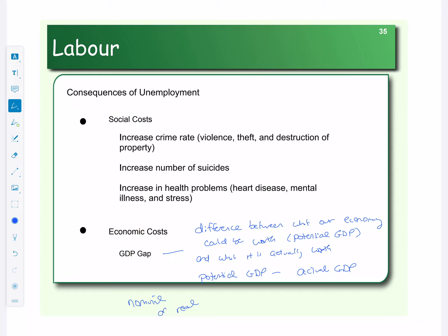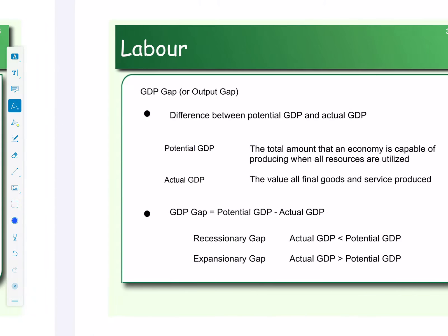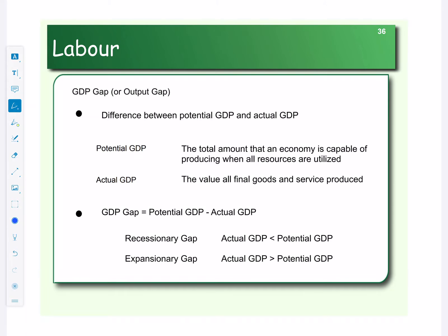Alright, so let's learn a couple of terms here. The GDP gap is considered to be a recessionary gap if your actual GDP is less than your potential. So if we're not producing as much as we could be, then our economy is not as big as it could be and we're likely in a recession.